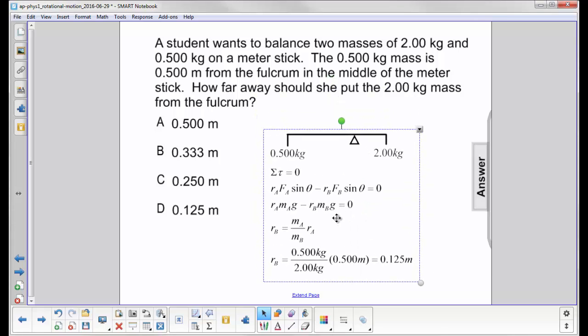Always nice to start with the sketch and the equations. Here's the 0.500 kilogram mass. Now, if we're going to put a heavier mass on the other side, we know that has to be closer to the fulcrum, so we're just going to sketch it like that.